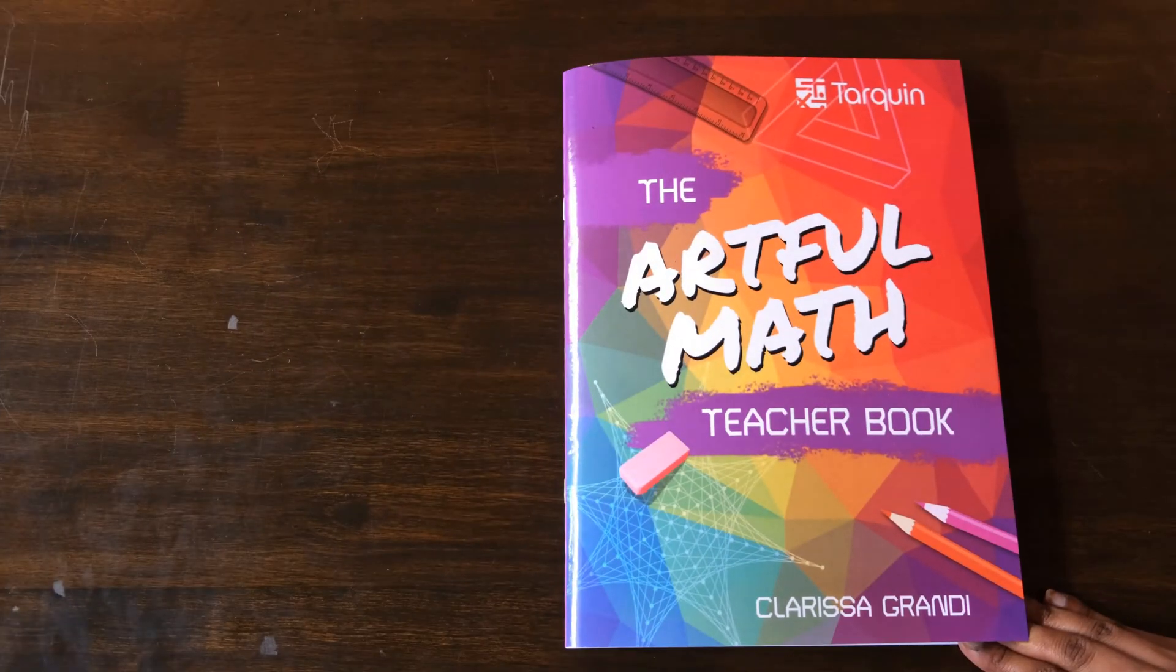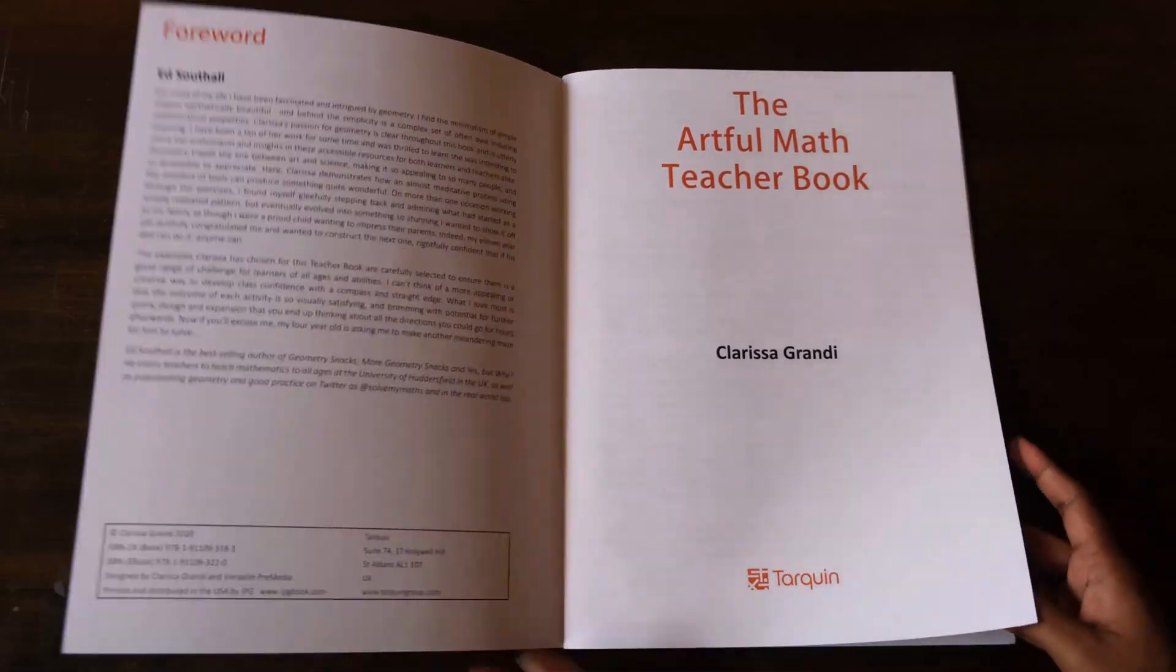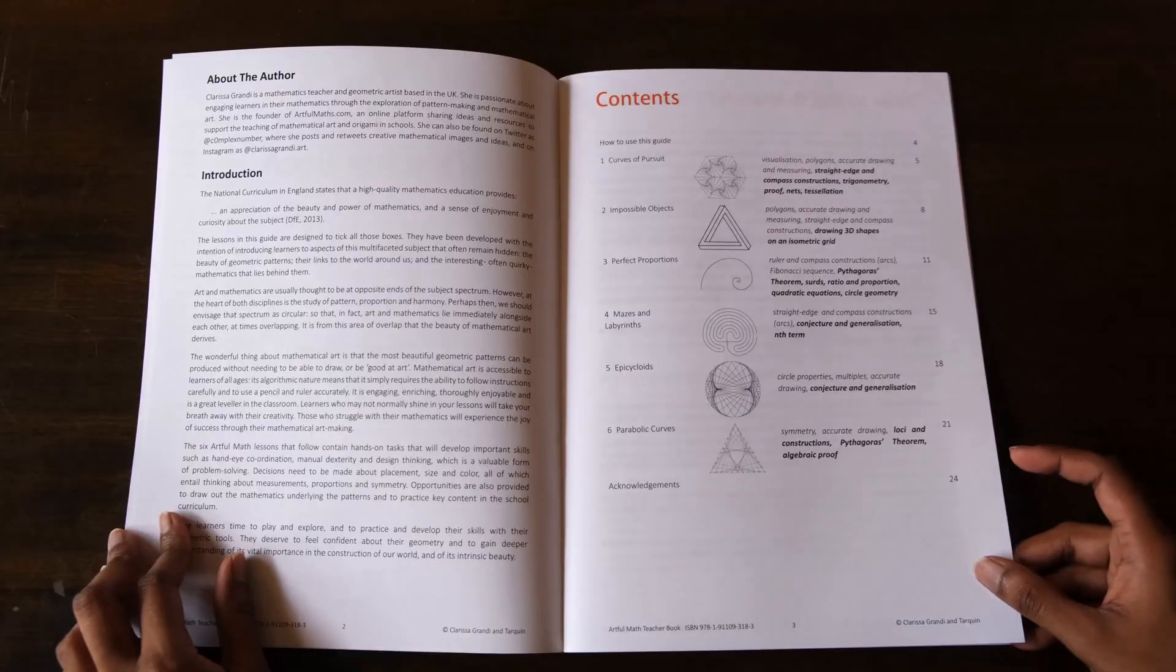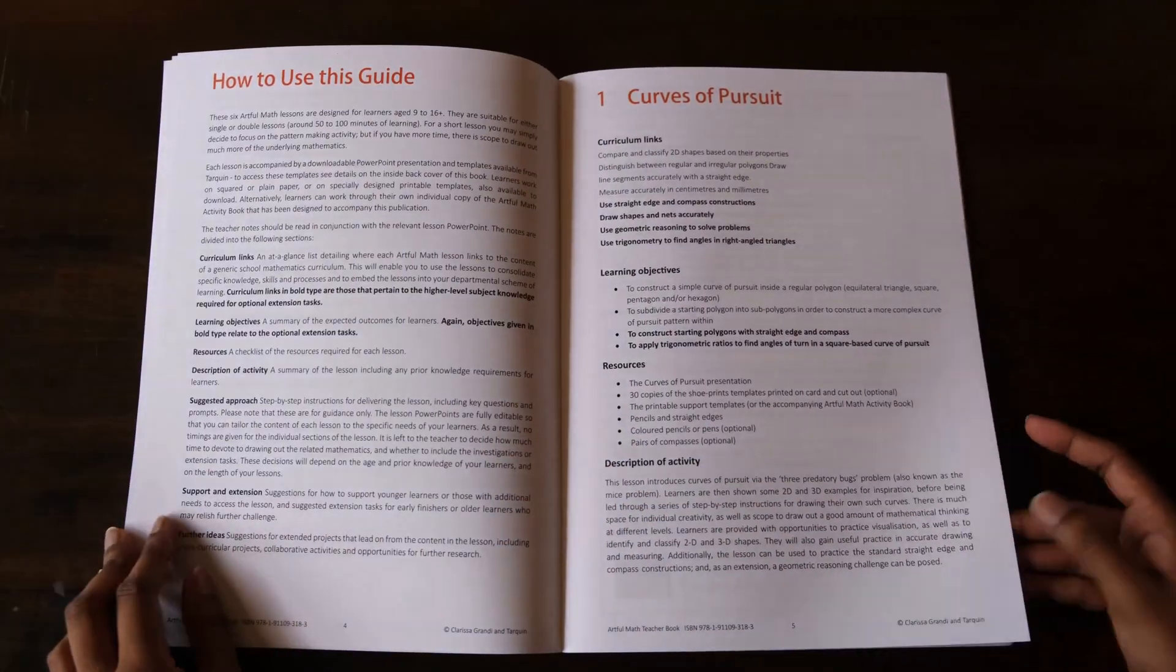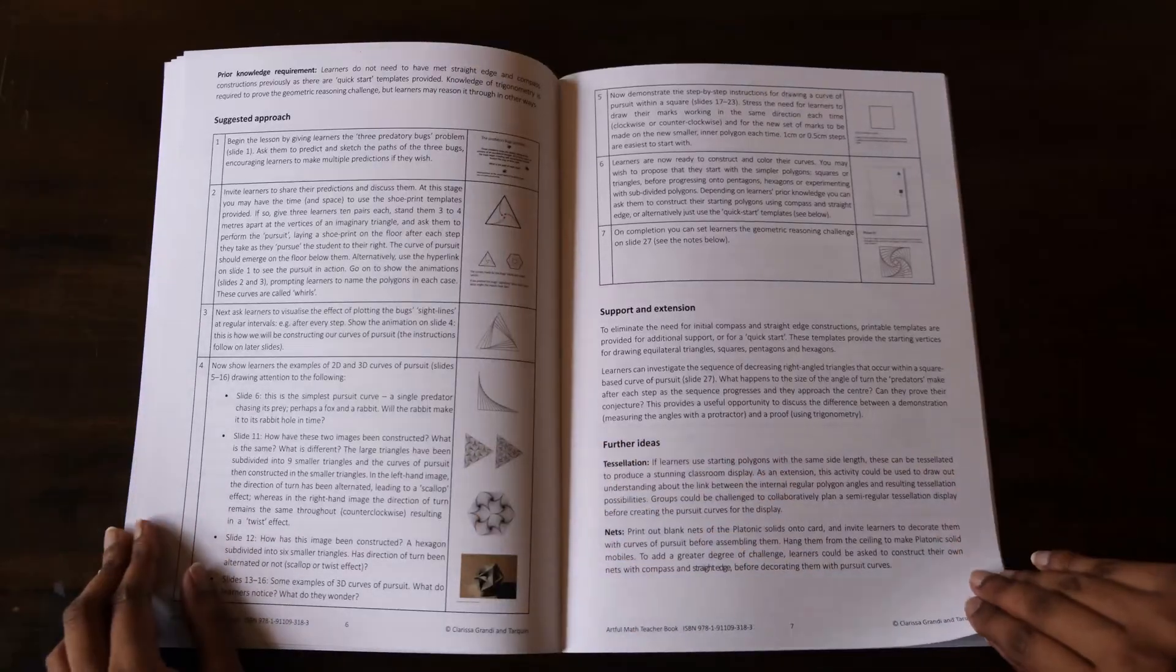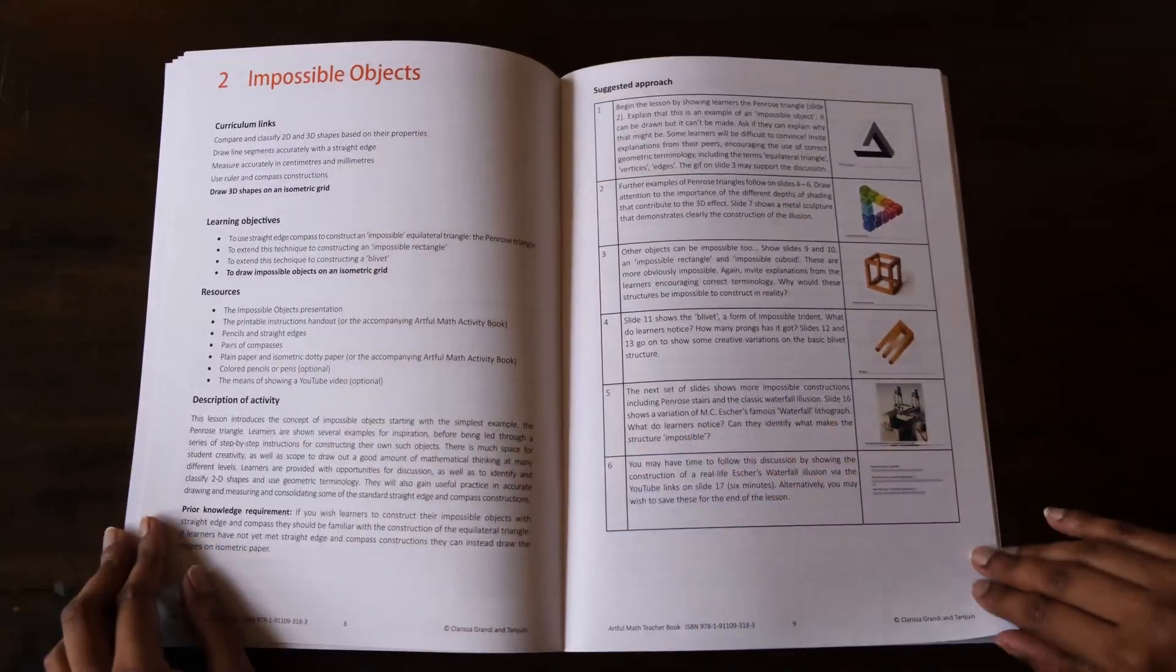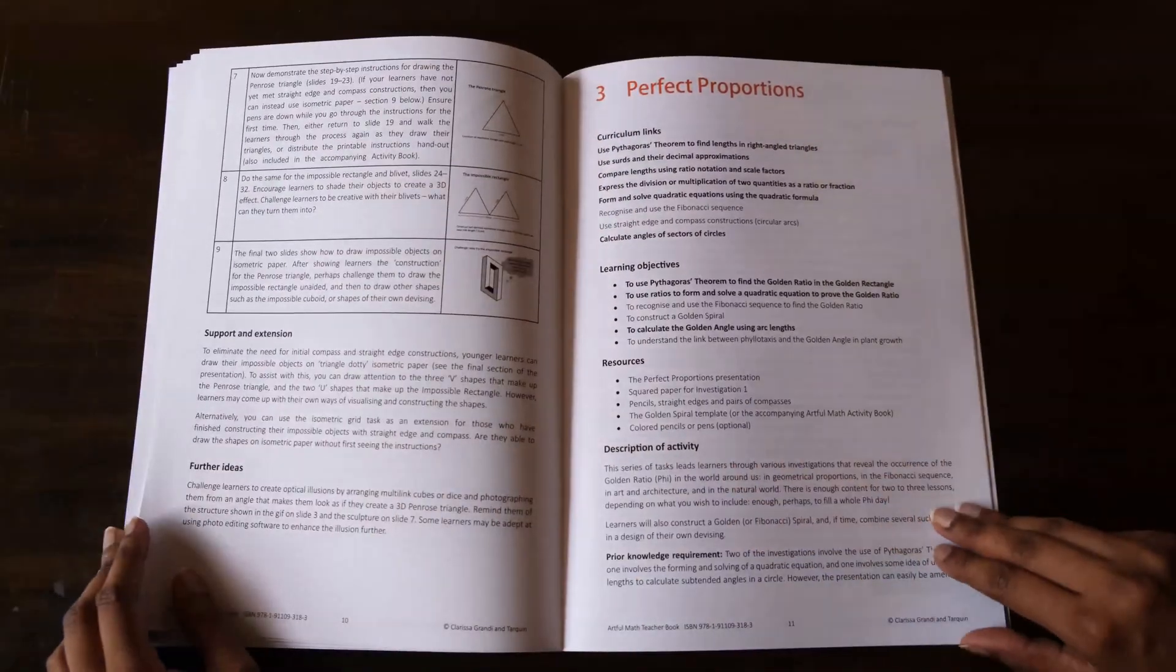This is actually a curriculum in its own right. There are six lessons in this program. At the beginning of each, it explains how the art lesson ties in with various mathematical concepts, the different learning objectives, the materials you need to complete the lesson, as well as giving a full description of the activity. It also provides a step-by-step script for teaching each lesson, which is really helpful.